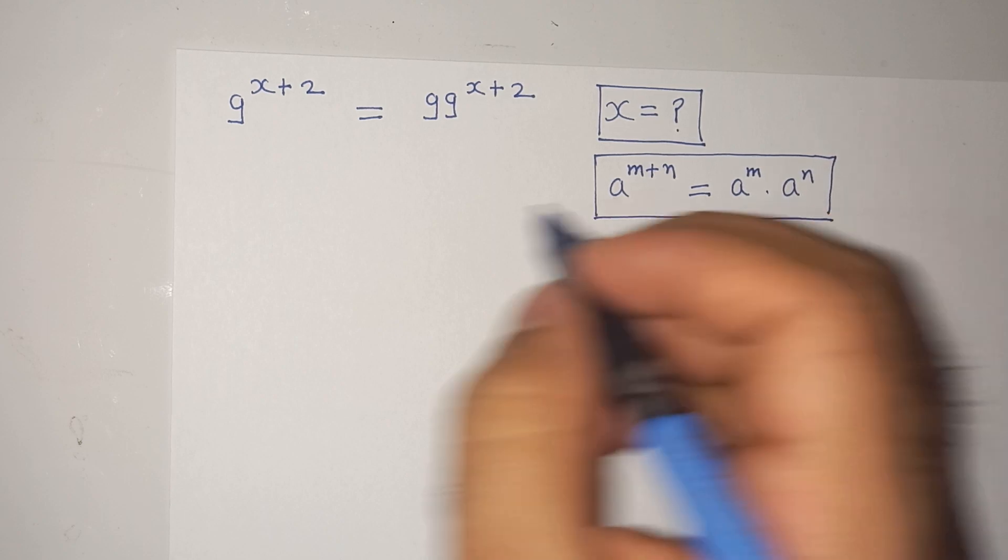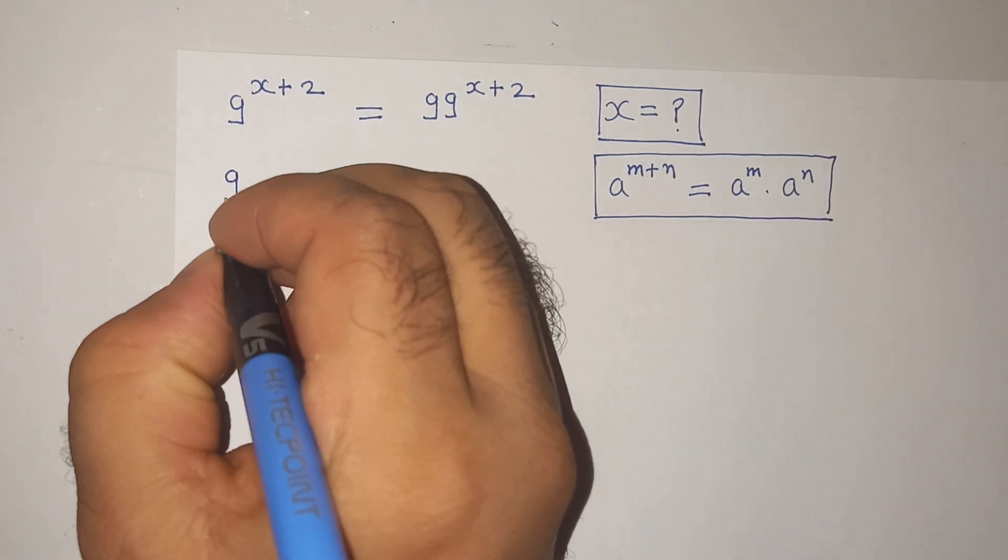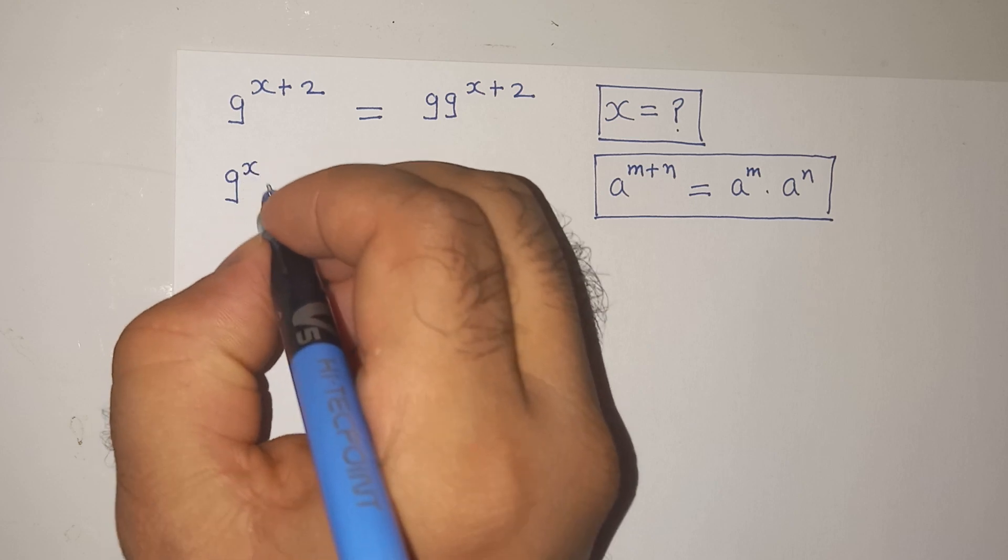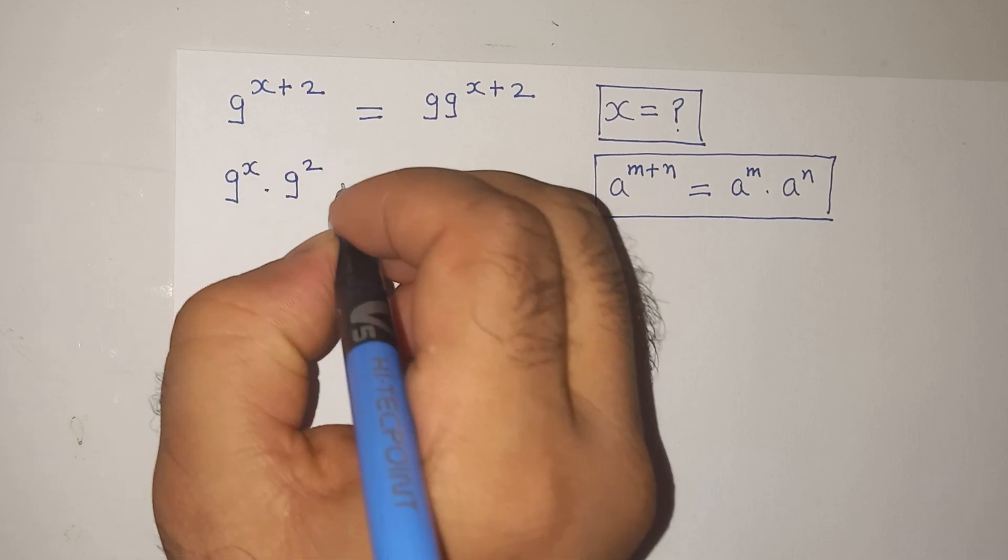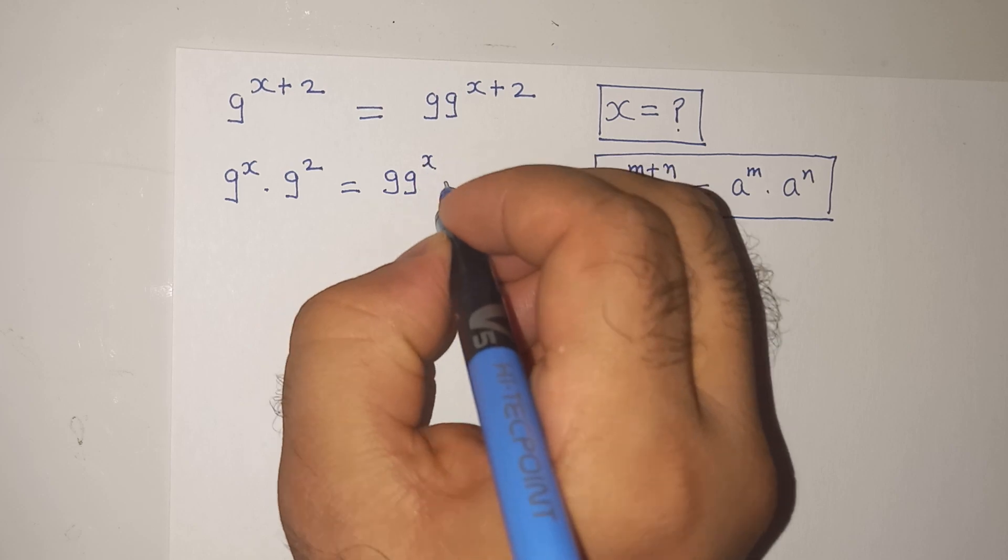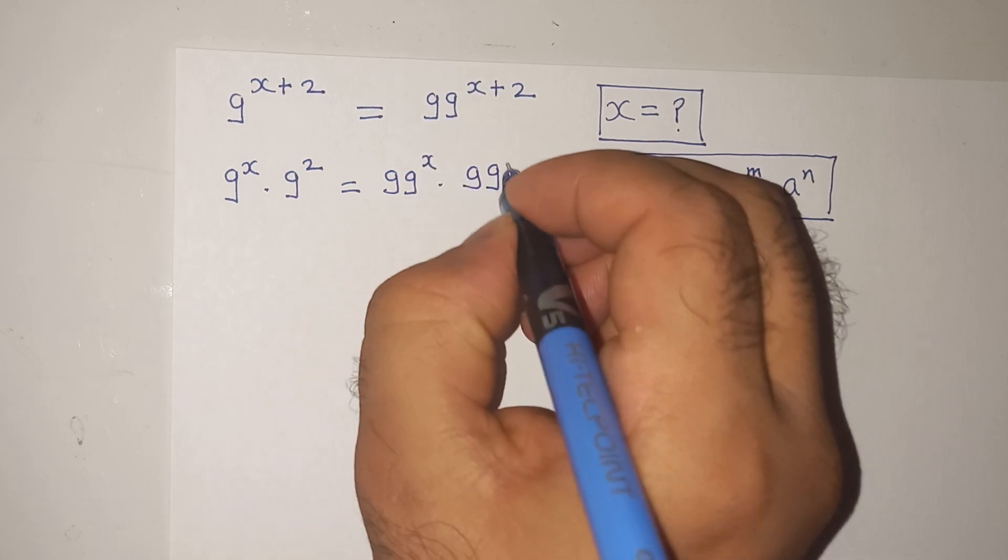So according to this exponential rule we can write the above expression as 9 power x multiplied 9 square equals to 99 power x multiplied 99 square.